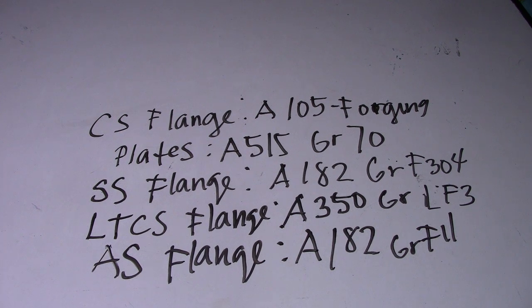In SS 304, they have 18% chromium and 8% nickel, whereas SS 316...